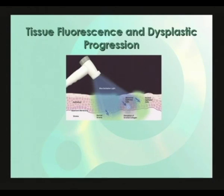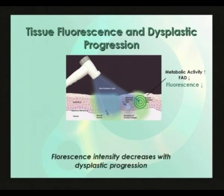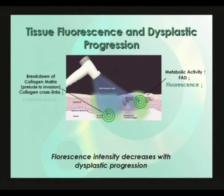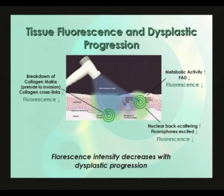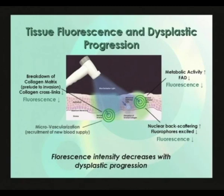Here we see in more detail how dysplasia and oral cancer result in decreased fluorescence intensity. There are four processes at work. First, the increased metabolic activity of the dysplastic cells in the epithelium causes a decrease in FAD, resulting in decreased fluorescence. Second, the breakdown of the collagen matrix, which occurs as a prelude to tumor invasion, results in decreased numbers of collagen crosslinks and thus decreased fluorescence. Third, increased scattering in the epithelial layer due to morphologic changes in the dysplastic cell nuclei will increase the backscattering of excitation light, decreasing its intensity in the tissue and resulting in decreased fluorescence. Fourth, increased blood supply needed to support the increased cellular activity of the dysplastic cells results in additional microvascularization in the stroma and increased absorption of light by blood, which in turn results in decreased fluorescence.